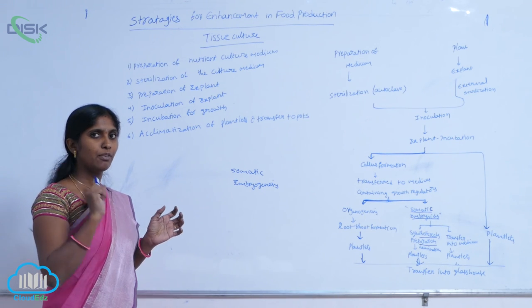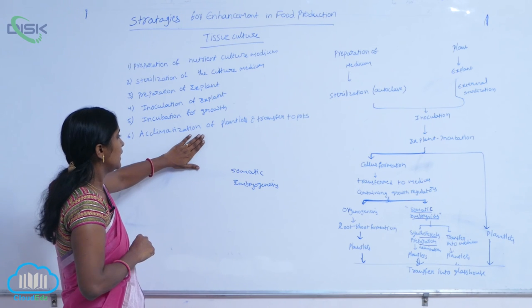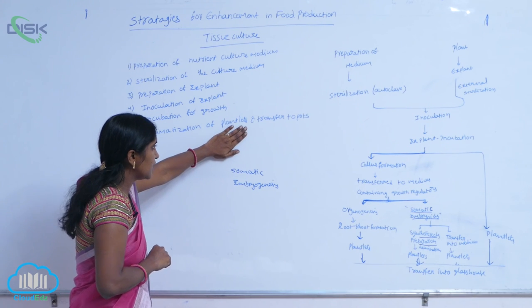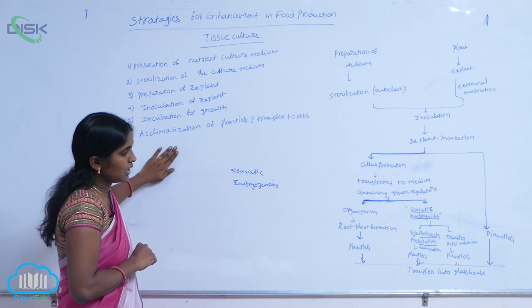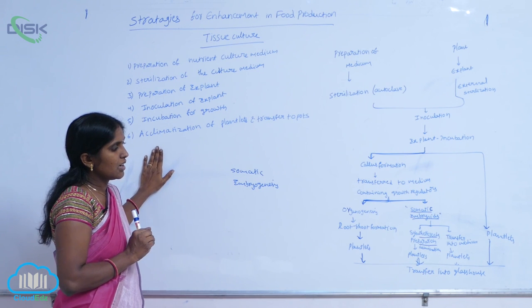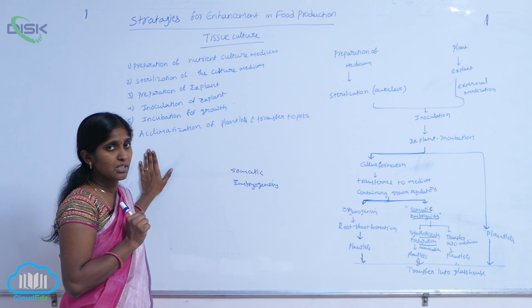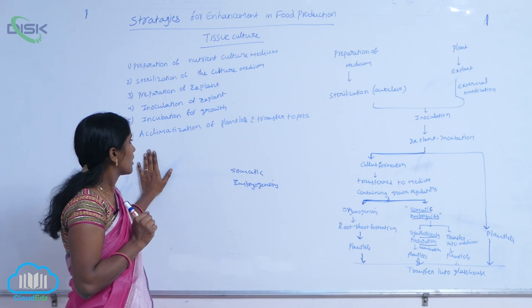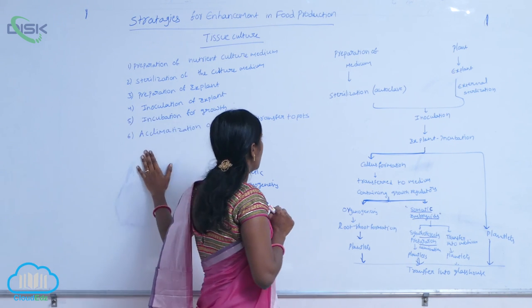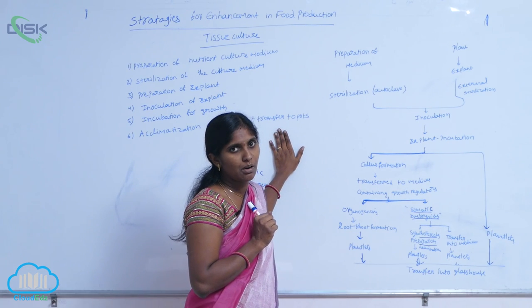The plantlets are formed. Then, acclimatization of plantlets — the plants are transferred into glass houses, and finally the plants are transferred into the pots.